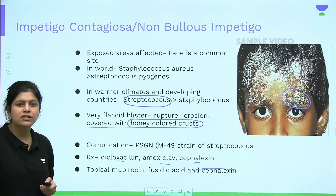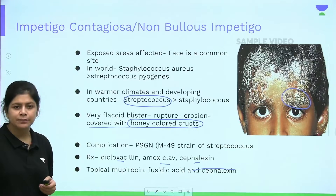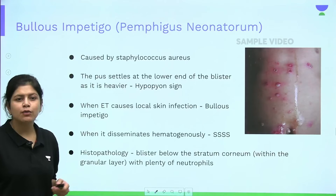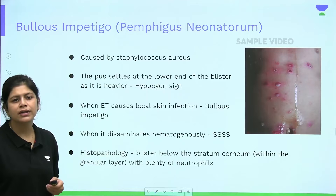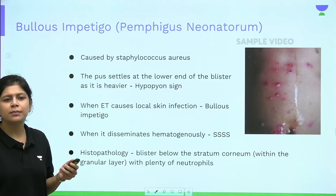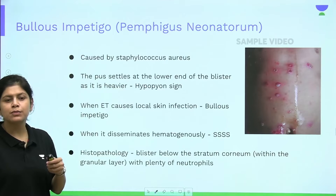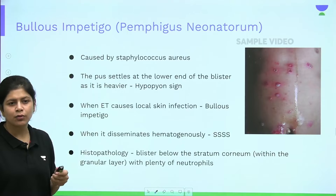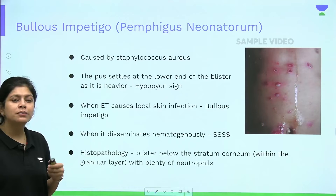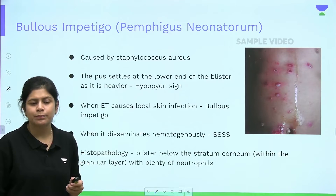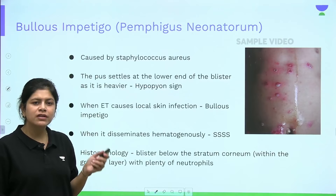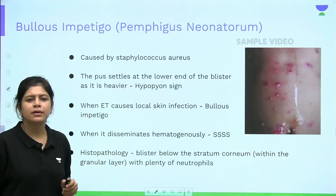Impetigo contagiosa is named 'contagiosa' because it is very easily transmissible. The other name for bullous impetigo is pemphigus neonatorum. Do not confuse this with neonatal pemphigus, which results from passive transfer of antibodies through the placenta from mother to child, causing transient blistering in the neonate.